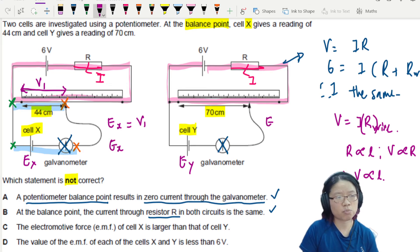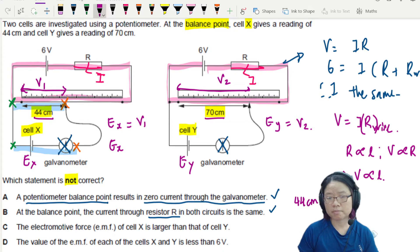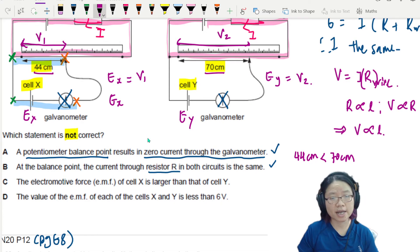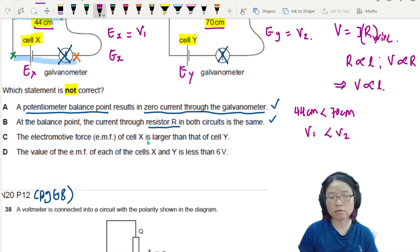Whereas for EY, which is equal to V2, let's say here to here is V2. So since 44 cm is less than 70 cm, then I can say that the V1 is less than V2 because V is proportional to L. So since V1 is equal to EX, EX will be less than EY. So cell X supposed to be less than Y. So this is wrong. The answer in this case is C.